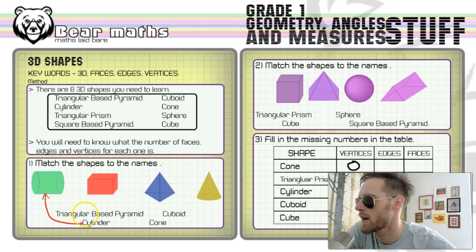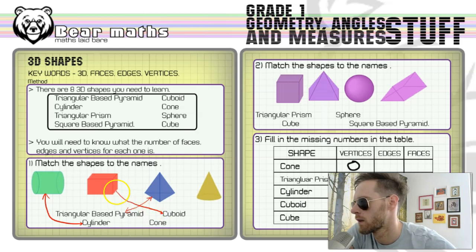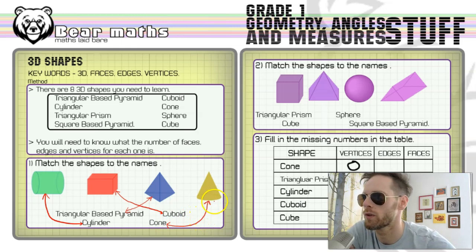The next one, the triangular based pyramid, is this one here—or the regular tetrahedron. The cuboid is the red one, and the cone is the yellow one. Just know what those look like and be able to match them up. It's a relatively simple thing.